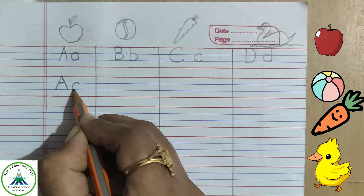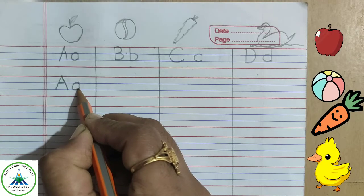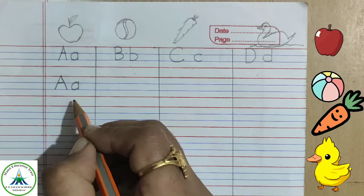To write small letter A, make a curve and put a standing line in two blue lines, this is small letter A.